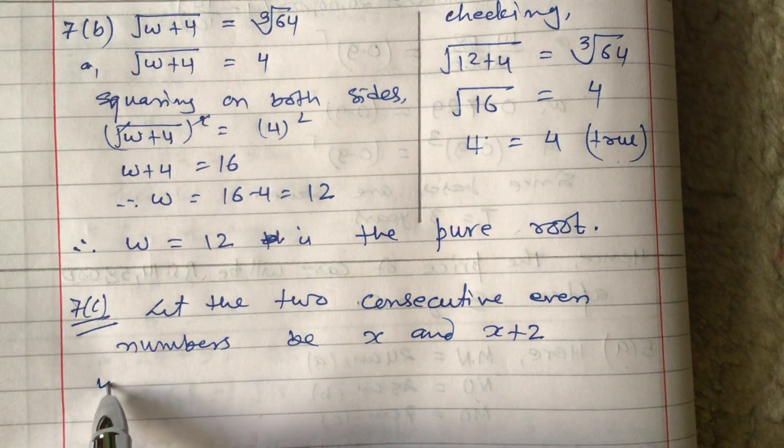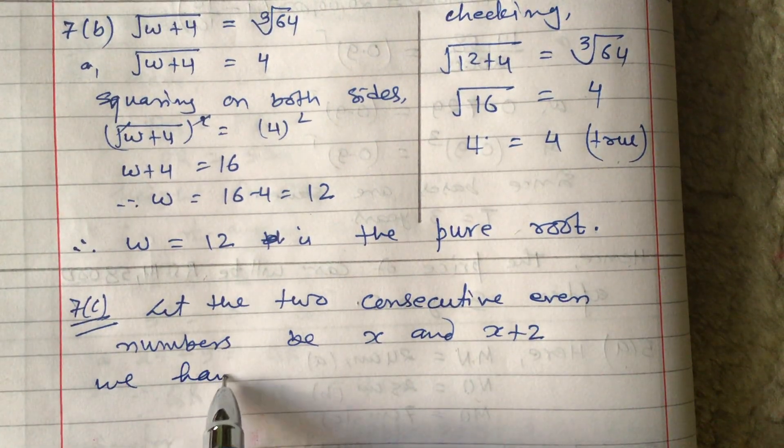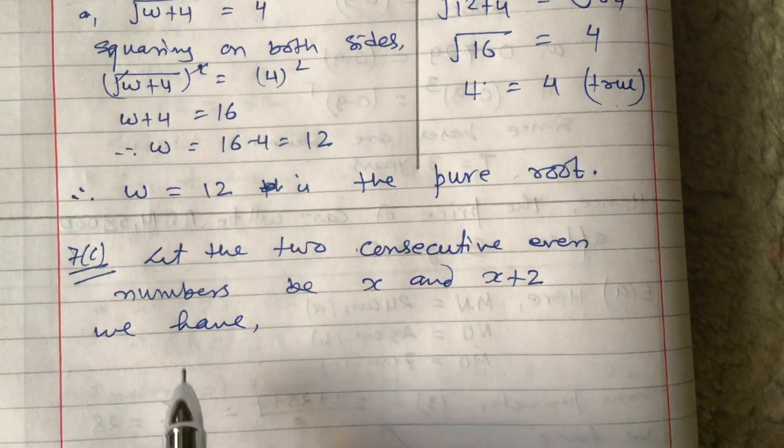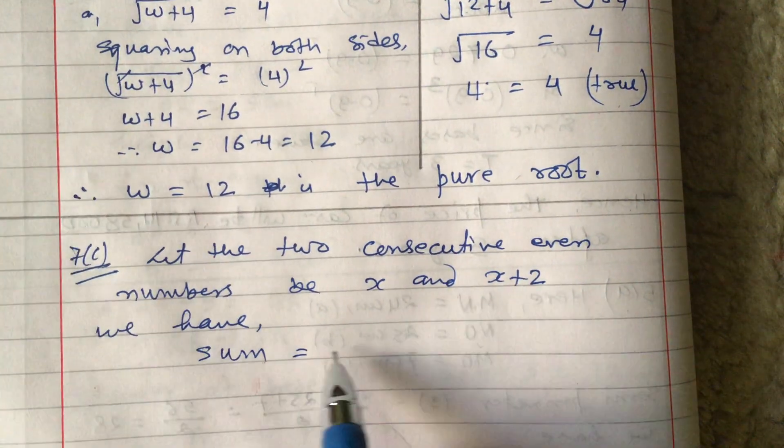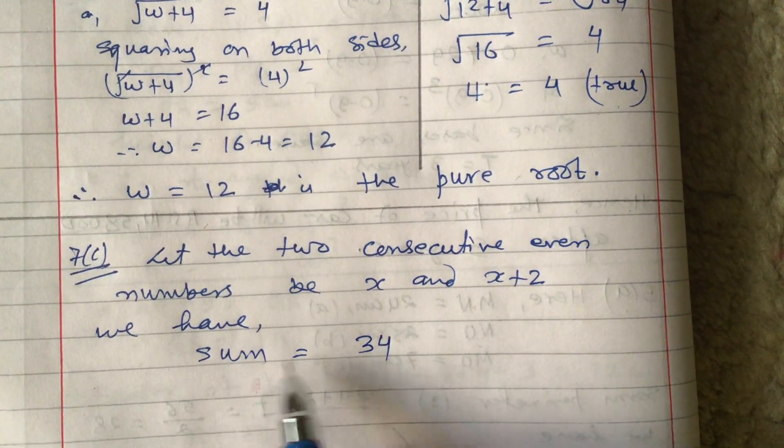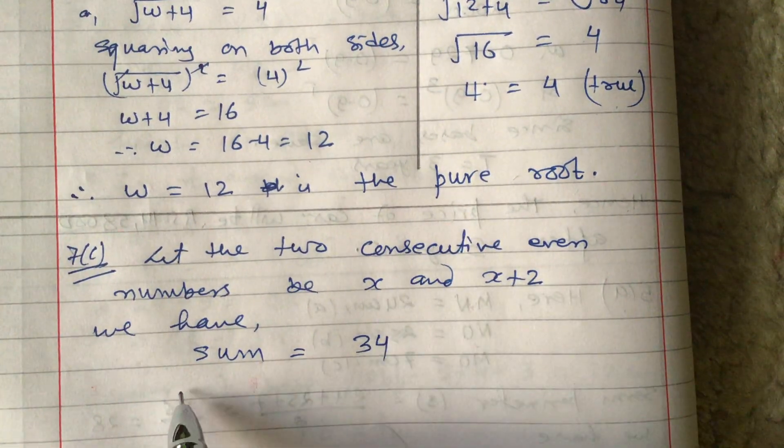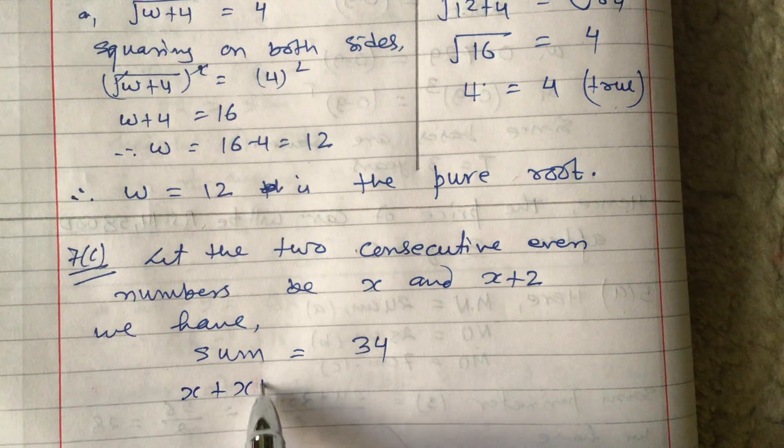It is given that the sum of the two numbers is 34. So the sum is x plus x+2 equals 34.